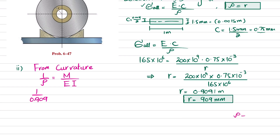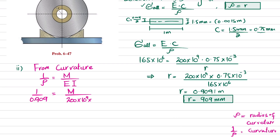ρ is the radius of curvature, so 1/ρ = 1/r = 1/0.909. The moment M is unknown, which we will find. E is 200 × 10⁹ pascal. For the second moment of inertia I of this rectangular cross-section: I = (1/12) × b × h³, where b = 1 meter and h = 0.0015 meter (the thickness).